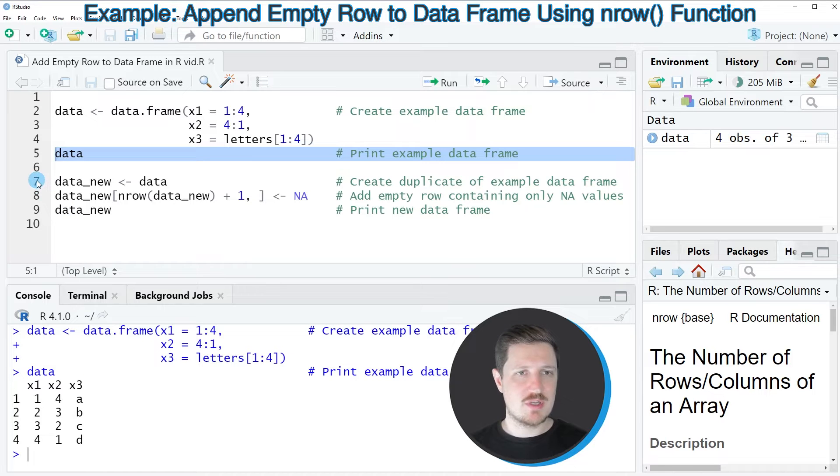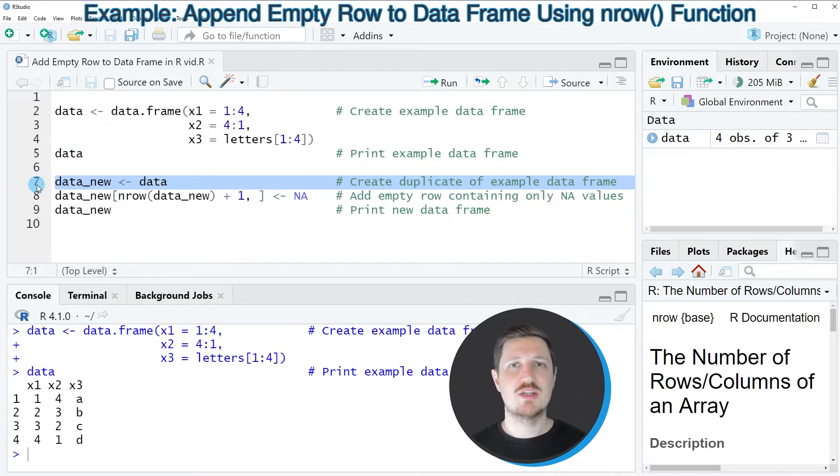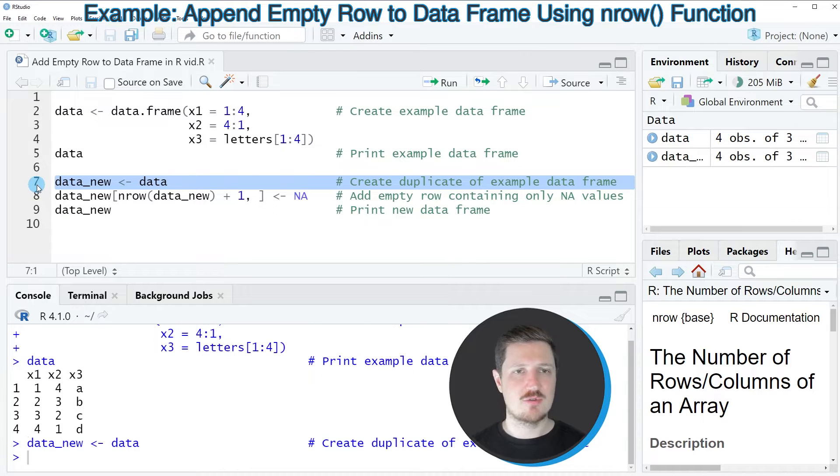Then we can apply the code in lines 7 to 9. As a first step, in line 7 I'm duplicating our data frame because I also want to keep an original version. After running this line, a new data set called data_new appears at the top right, and at this point it contains exactly the same values as our input data frame.